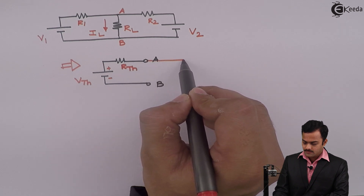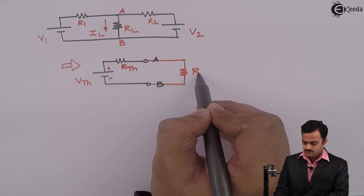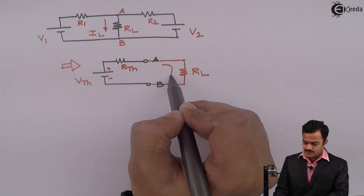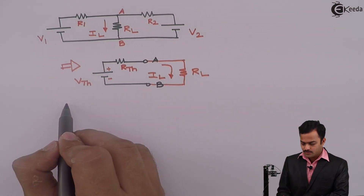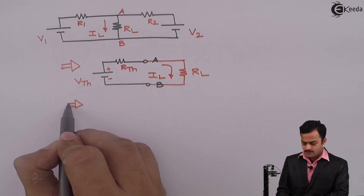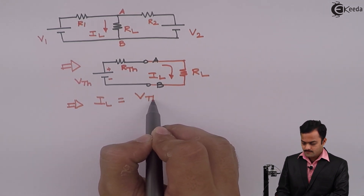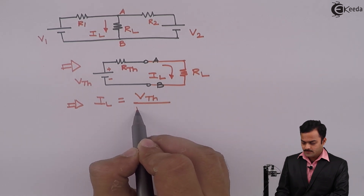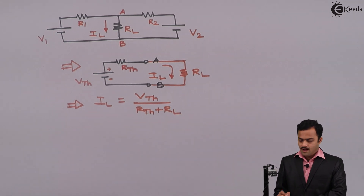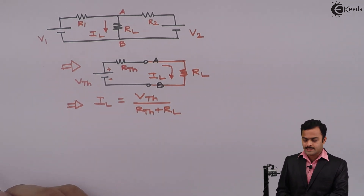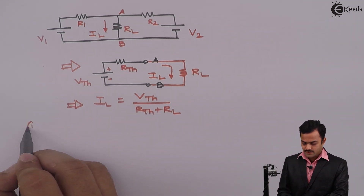After reducing the circuit into this form, you connect the load resistance to this circuit. Our objective is to get the current IL. If I know the circuit, it is very simple: IL equals Vth divided by (Rth + RL), where RL is known. The only concepts left are how to get Vth and how to get Rth.